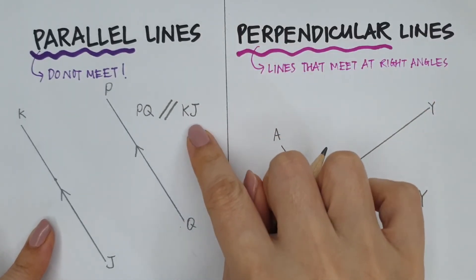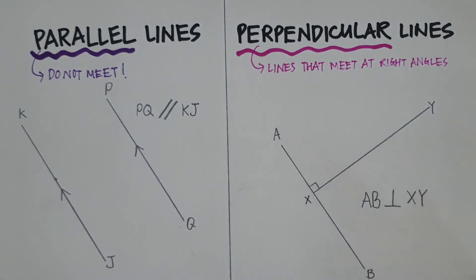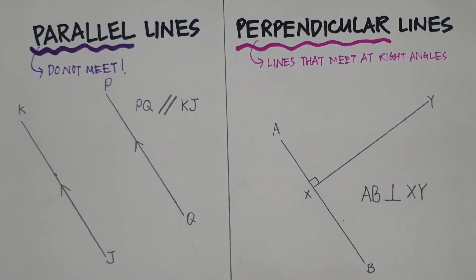It doesn't matter. I can call it KJ, I can call it JK. It's still the same line. So now I have this side by side. You can see the difference between a perpendicular line and a parallel line.